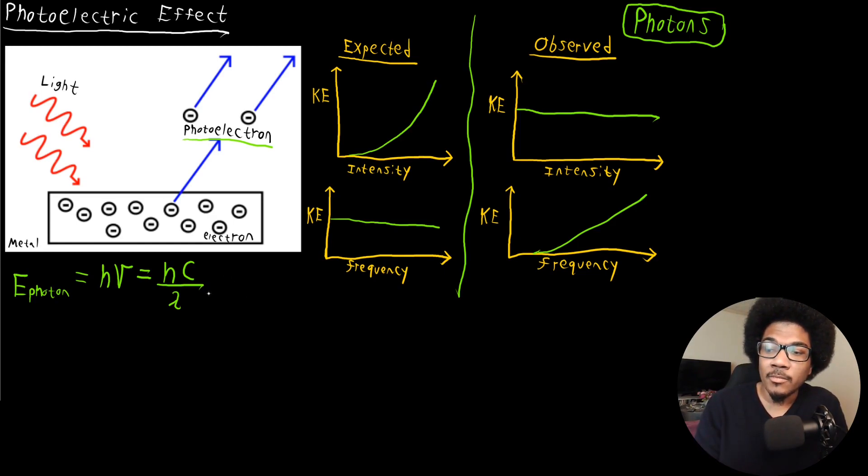Now, to add some more weight to this, Einstein married this idea with his theory of special relativity. So his special relativity theory is that E is equal to MC squared.